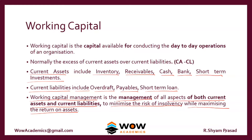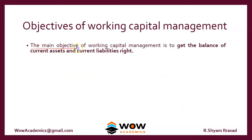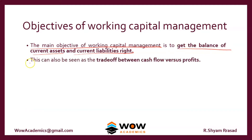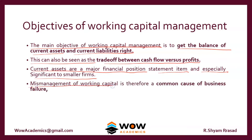Working capital management is a trade-off between liquidity and profitability. The main objective of working capital management is to get the balance of current assets and current liabilities right. This can also be seen as a trade-off between cash flows and profits. Current assets are a major financial position statement item, especially significant to smaller firms, though they represent a significant number for large firms as well. The mismanagement of working capital is therefore a common cause of business failure — if the company does not get working capital right, there is a high chance of the business failing.